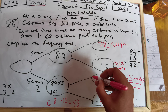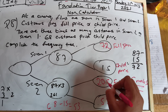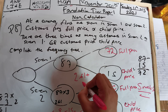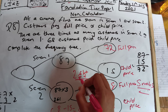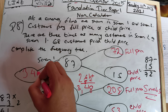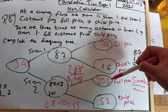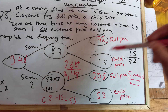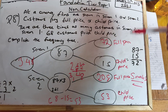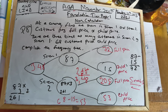I can now work out the remaining numbers. 261 take away 53 gives us 208. Then 261 plus 87: 1 plus 7 is 8, 6 plus 8 is 14, so the answer is 348. So to summarise: 53 came from 68 take away 15; 72 came from 87 take away 15; and 208 came from 261 take away 53. That is my answer for the frequency tree question.